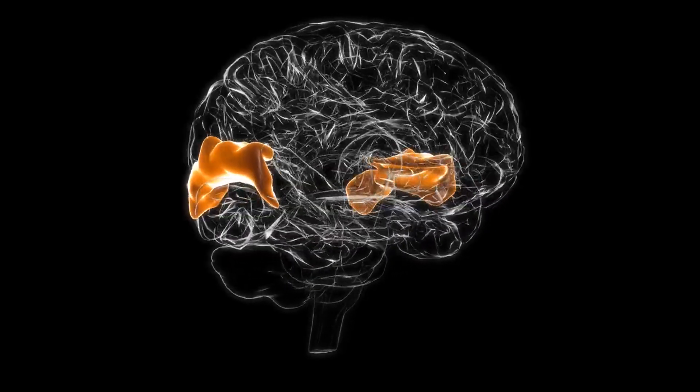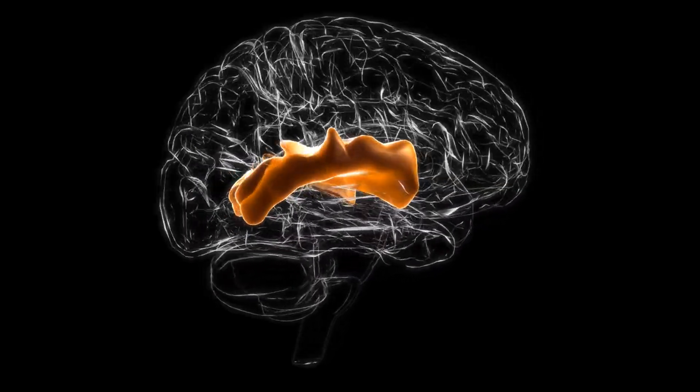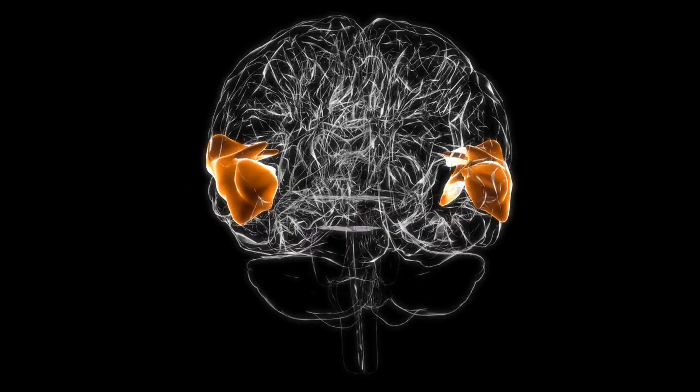Finally, the temporal lobe is essential for processing auditory information and is crucial for memory and emotion.